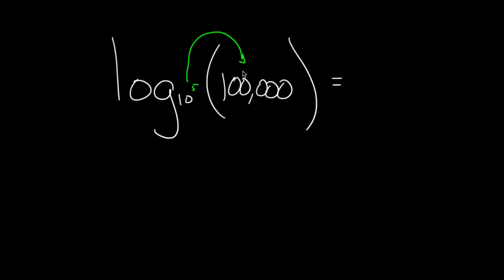So if 5 is the number I raise 10 to to get 100,000, then that's the answer to this, that log base 10 of 100,000 is 5. And look what happened, log took a huge number, 100,000, and turned it into 5. Well, that's outstanding, log can take huge numbers, turn them into nice numbers.